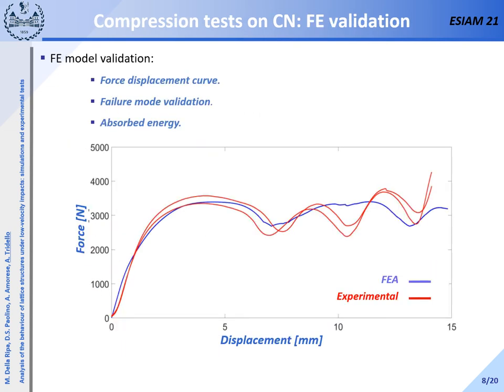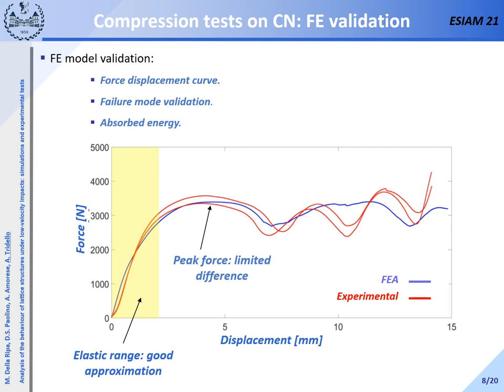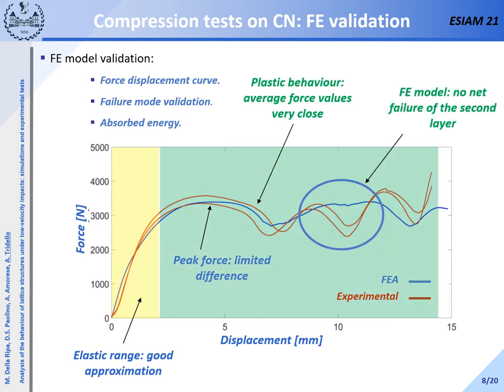In this slide, the experimental and numerical results are analyzed. In particular, the force-displacement curve, the failure modes, and the absorbed energy are compared. Considering the force-displacement curve, in the elastic region the two curves are very close. The peak force obtained experimentally and numerically are similar, with the finite element curve between the two experimental curves. For the plastic region, the numerical curve is close to the experimental curves. In particular, the failure of the first and the third layer found experimentally and numerically occur at the same displacement and peak force, whereas in the simulated curve a net failure of the second layer is not evident.